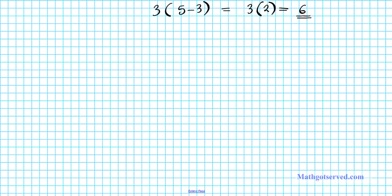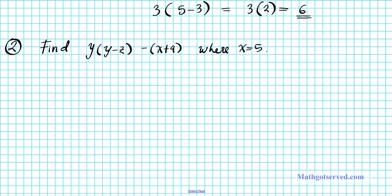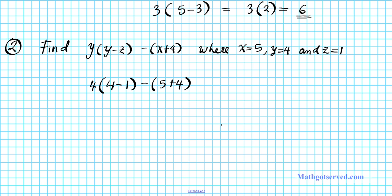Now let's take a look at another example. Problem number 2: find y × (y − z) − (x + 4), where x is equal to 5, y is equal to 4, and z is equal to 1. We're going to plug in these values into this expression, giving us: 4 × (4 − 1) − (5 + 4). Let's write down our mnemonic device — please excuse my dear Aunt Sally.